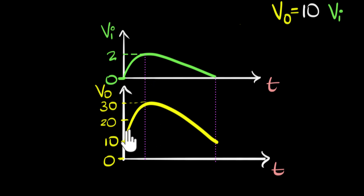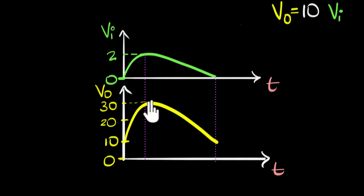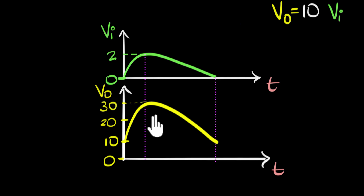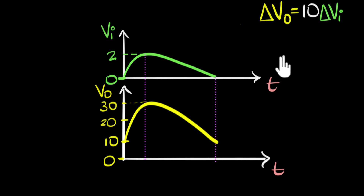Notice that the change is magnified. The input changed by two, and the output changed by 20 — 10 to 30 is a change of 20. Similarly, the input decreased by two, and the output also decreased by 20. So what's really important is that the change in the output voltage has to be some constant number times the change in the input voltage. If we get this, we can say the circuit is behaving like an amplifier.